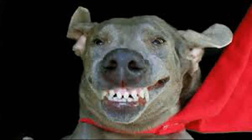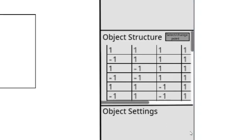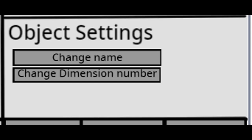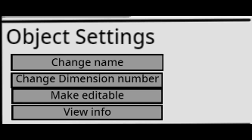Next, I finally decided to add stuff to the previously empty object settings tab. I added options to change its name and dimension number, and later added options to make it editable and view its info.